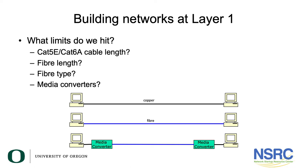You might say, suppose I put in better cable — suppose I buy more expensive Cat6a cable. Does that help? Well, Cat6a also has the 100 meter limitation. What's different is that Cat6a will let you do 10 gigabits over 100 meters, whereas Cat5e will only let you do 1 gigabit over 100 meters. You don't actually gain any distance by using the more expensive cable, but you do gain the ability to run at higher speed.